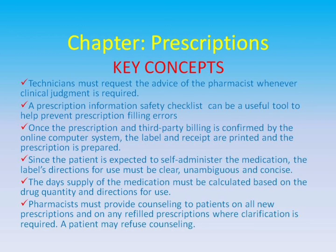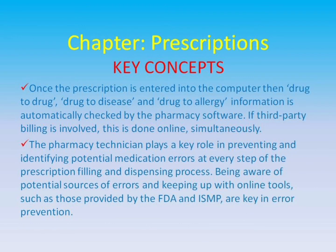Pharmacists must provide counseling to patients on all new prescriptions and on any refilled prescriptions where clarification is required. A patient may refuse counseling. Once the prescription is entered into the computer, drug-to-drug, drug-to-disease, and drug-to-allergy information is automatically checked by the pharmacy software. If third-party billing is involved, this is done online simultaneously. The pharmacy technician plays a key role in preventing and identifying potential medication errors at every step of the prescription filling and dispensing process. Being aware of potential sources of errors and keeping up with online tools, such as those provided by the FDA and ISMP, are key in error prevention.